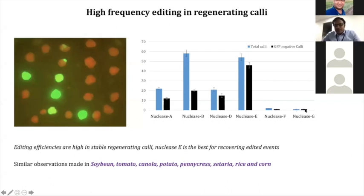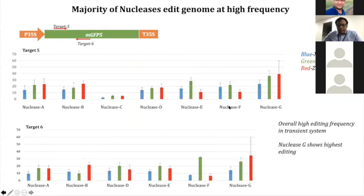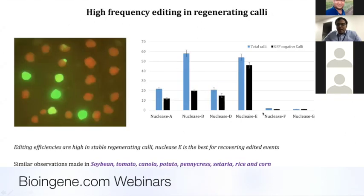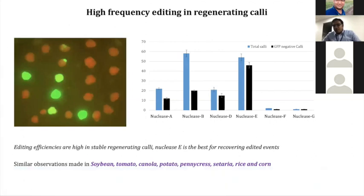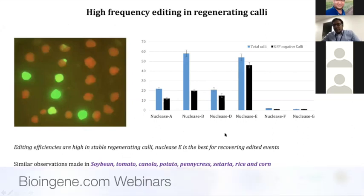With nuclease G we also have higher editing efficiency but incredibly low regeneration efficiency — these cells are edited, but going back, nuclease G is the highest performing in terms of editing efficiency, but we are not getting the number of cells becoming individual calli when we deliver nuclease G.